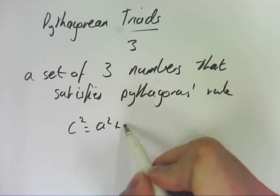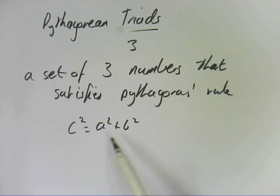So c squared equals a squared plus b squared. It's any set of three numbers that satisfy this rule, remembering that c must be the larger one. So there are questions in here that ask you, is this a Pythagorean triad?